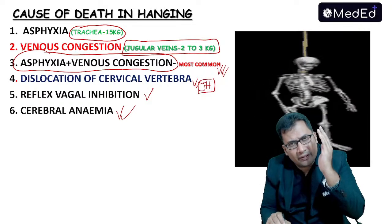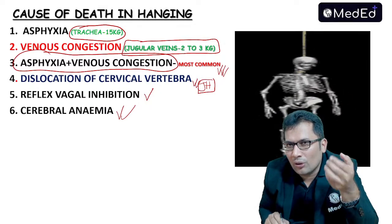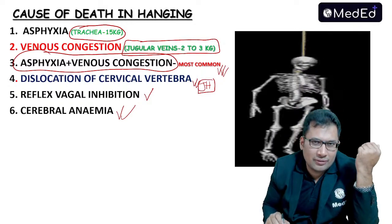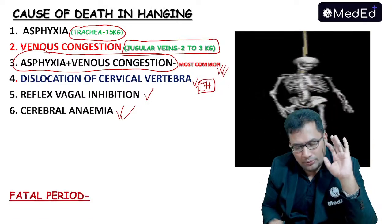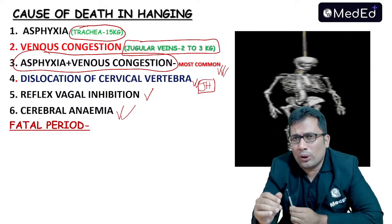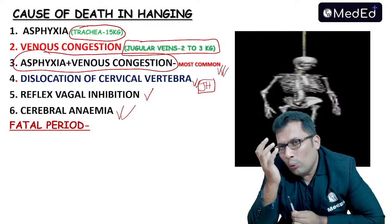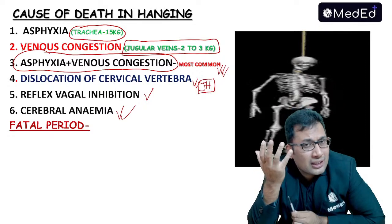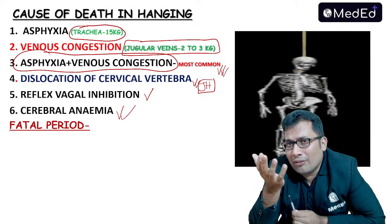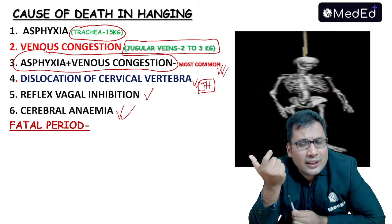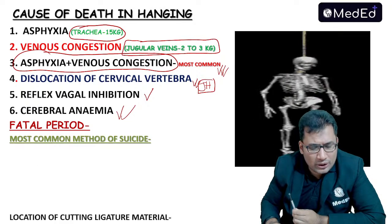To remember the pressures: trachea is occluded at 15 kg, jugular veins at 2–3 kg, vertebral arteries at 20–30 kg, and carotid arteries around 5–10 kg. Regarding the fatal period: hanging is the commonest method of suicide in India according to crime bureau investigation. Fatal period is around 3 to 5 minutes, which is relatively short, making it a commonly chosen method.